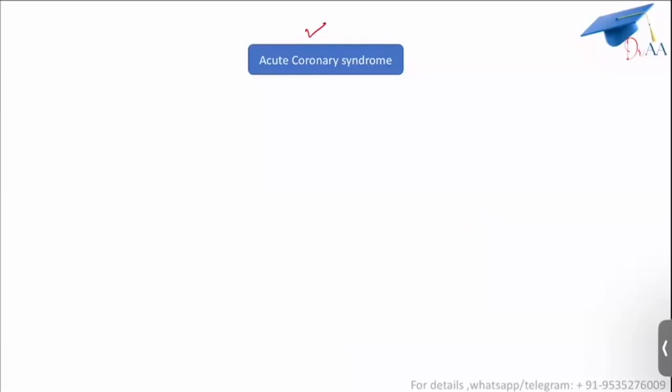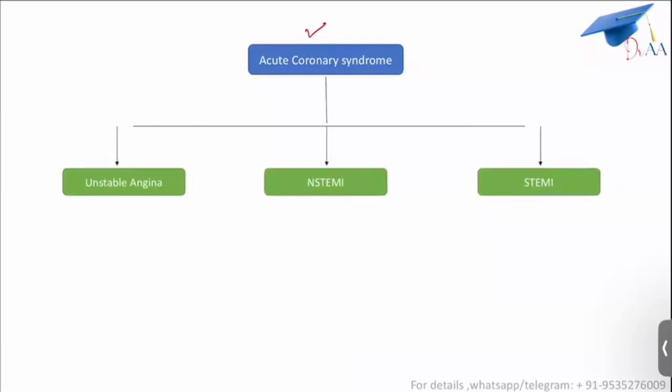Acute coronary syndrome, by definition, has three things involved in it. Unstable angina is also known as acute coronary syndrome. NSTEMI is also known as acute coronary syndrome. And STEMI is also known as acute coronary syndrome.